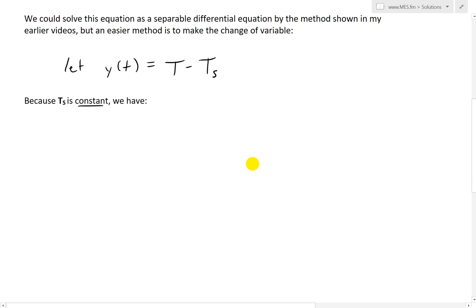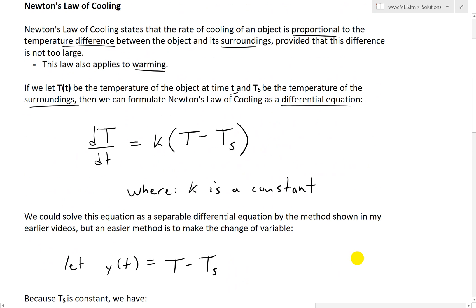Then what we end up having is the derivative. When we look at the derivative y prime of t, this equals the derivative T prime. This capital T is a function of time, and the derivative of the constant temperature just goes to zero. So if you write this in this notation, dy over dt is just equal to dT over dt, and that is what we have over here.